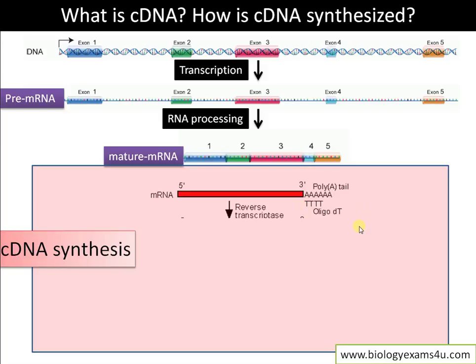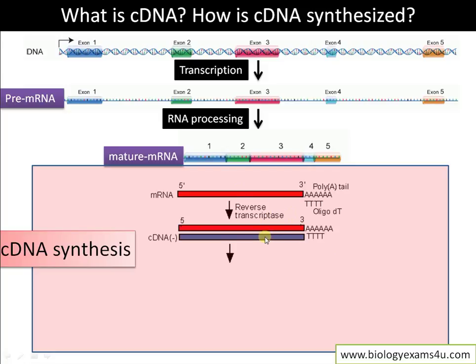A poly-T primer can be used, and using reverse transcriptase — the enzyme capable of synthesizing DNA from an RNA template — we can synthesize a DNA strand. The red strand is the mRNA strand. Using this enzyme, we synthesize a complementary DNA strand. This first DNA strand is called cDNA, or complementary DNA — a strand that is complementary to mRNA.